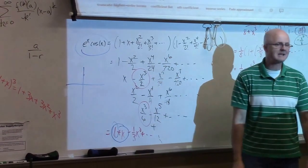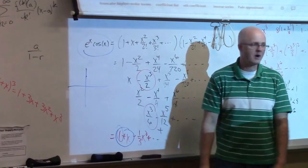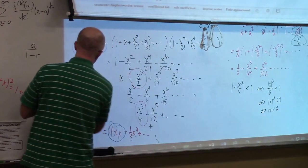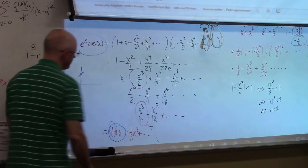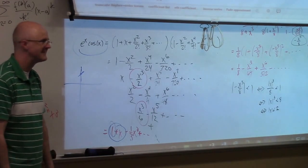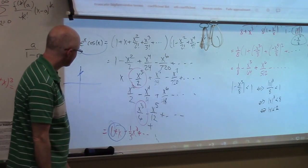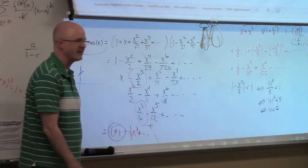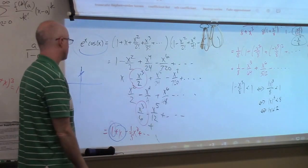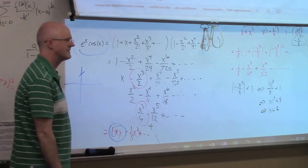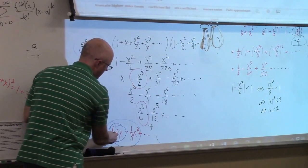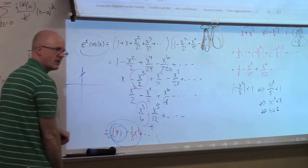As a first order approximation, use one plus x — a linear function with a y-intercept of one and a slope of one. Draw a little line with slope one through this point. The graph of e to the x cosine of x looks like that line when x is close to zero. There is no x squared term. If there were an x squared term, the graph would look like an upward opening parabola near here. Since there is no x squared term, evidently this function has an inflection point at x equals zero.